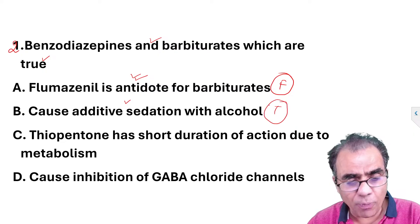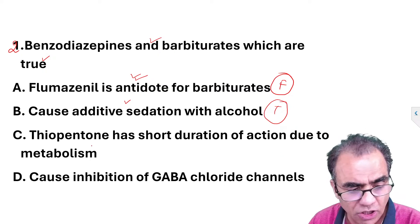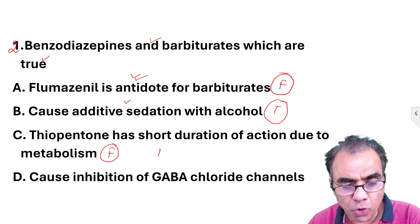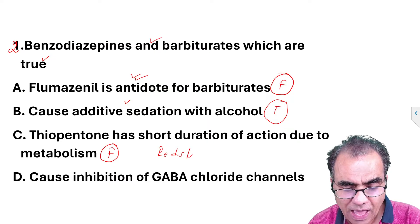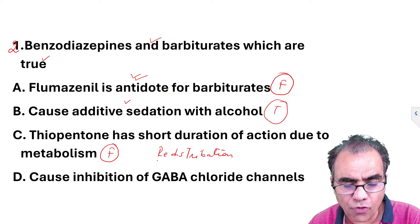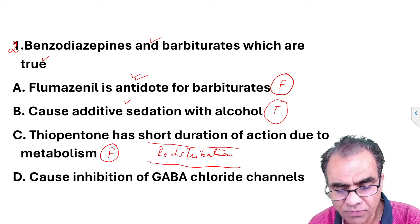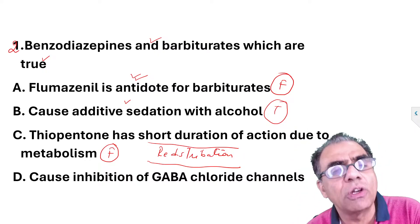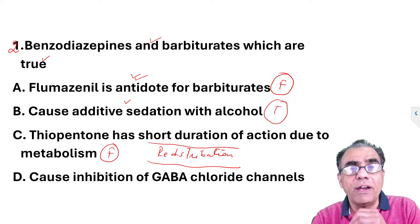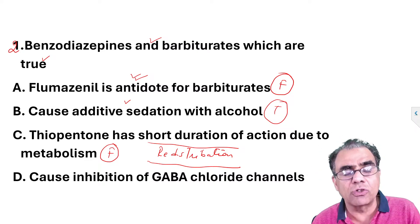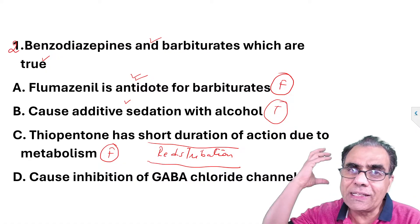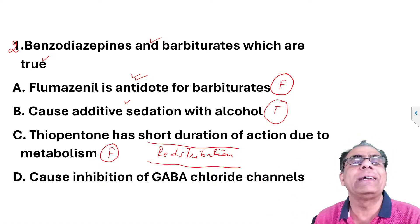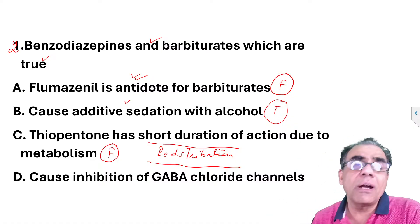Third statement: thiopentone has a short duration of action due to metabolism — this is false. It has a short duration of action due to redistribution. This redistribution is a property of all IV agents: they first go to areas with high vascularity like the brain, and from there get redistributed to areas with low vascularity like muscle or fat. Due to redistribution, the drug leaves the brain within around 10 to 15 minutes, and the patient becomes conscious.